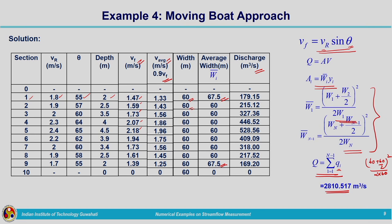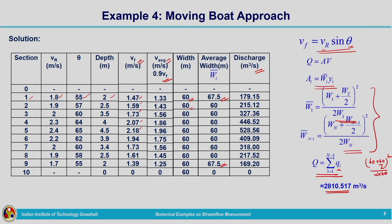For problems with non-prismatic channels, area computation requires care — particularly in finding the average width for the first and last sections using the similar triangle principle. You do not need to memorize the formula; derive it using the triangle area formula (½ × base × altitude). For intermediate strips, area is calculated as a rectangular strip. Making triangular and rectangular areas consistent through the average width w̄ᵢ allows area computation as average width times depth.